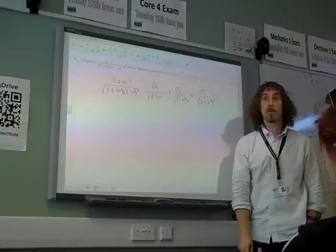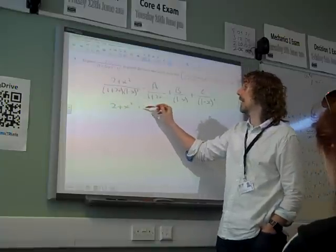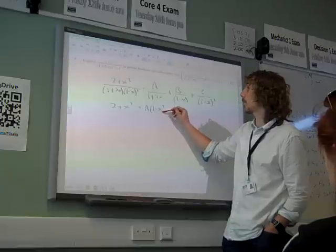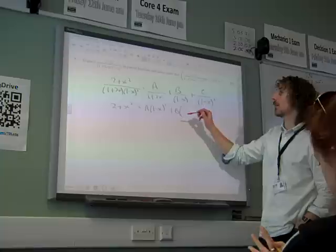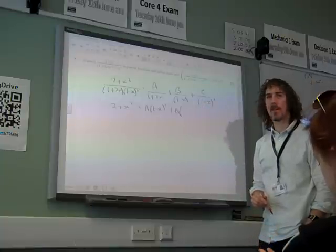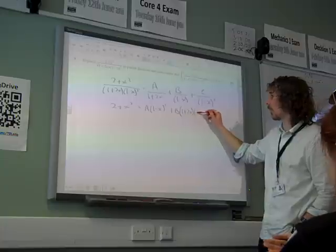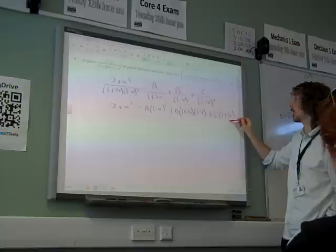Now we do that thing of multiplying through by the denominator to write 2 plus x squared is, well that would be a times 1 minus x squared. That would be b times, if we multiply by the whole of that denominator, we still have a 1 plus 2x and we still have the other 1 minus x going on there, and c would be times the 1 plus 2x.